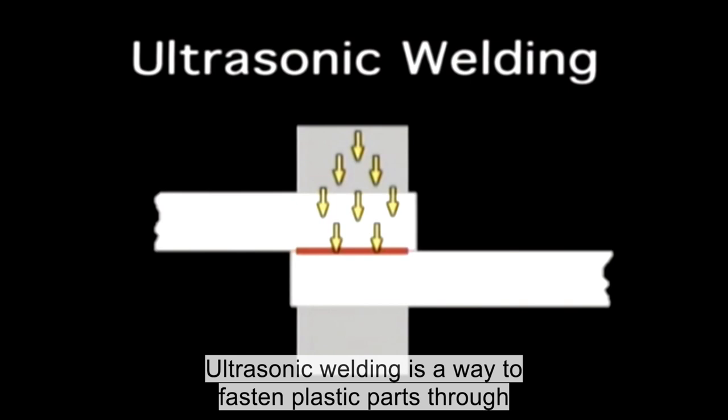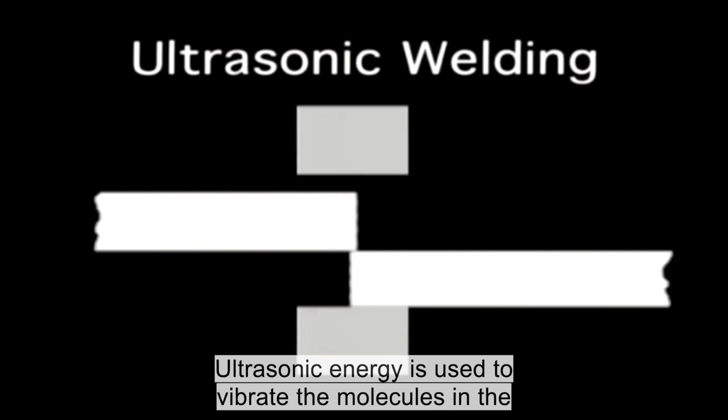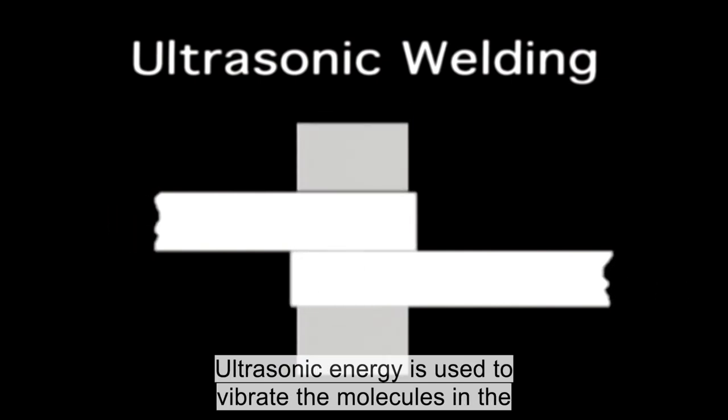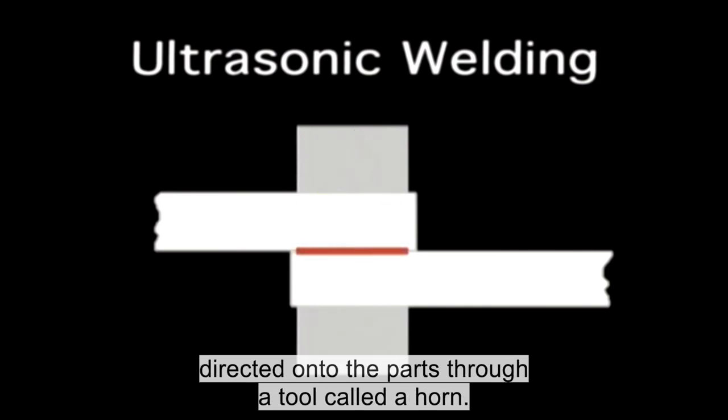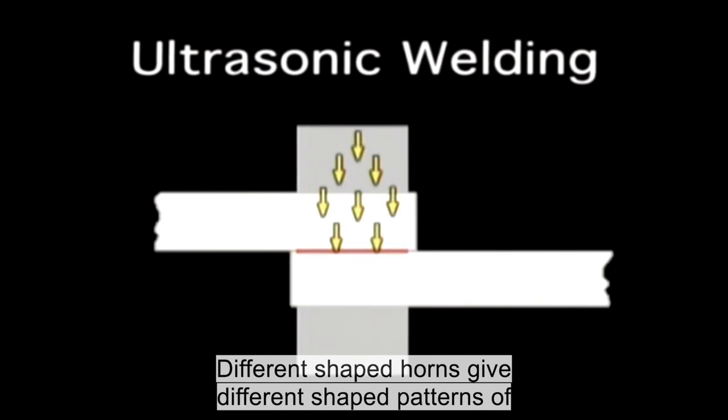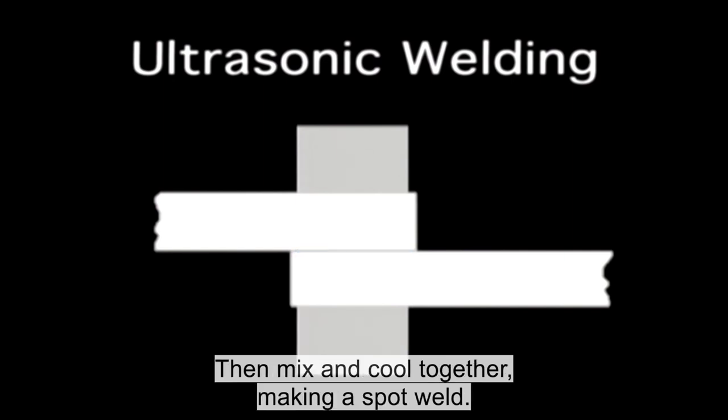Ultrasonic welding is a way to fasten plastic parts through cohesion or mingling the molecules between the two parts. Ultrasonic energy is used to vibrate the molecules in the plastics mechanically. Ultrasonic vibrations are produced by a machine and directed on to the parts through a tool called a horn. Different shaped horns give different shaped patterns of attachment. As the molecules vibrate, they heat and melt, then mix and cool together making a spot weld.